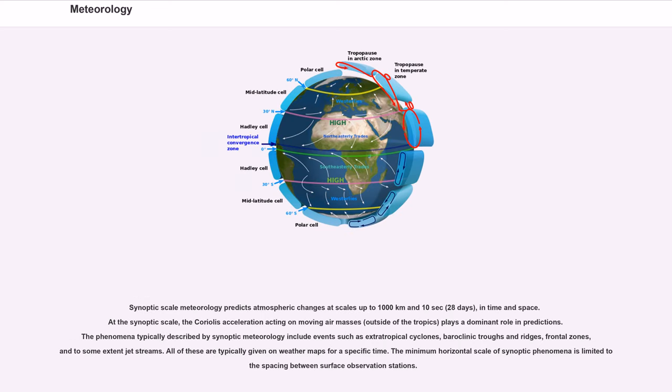Synoptic-scale meteorology predicts atmospheric changes at scales up to 1,000 km and 10 to 28 days in time and space. At the synoptic scale, the Coriolis acceleration acting on moving air masses plays a dominant role in prediction. The phenomena typically described by synoptic meteorology include events such as extratropical cyclones, baroclinic troughs and ridges, frontal zones, and to some extent jet streams. The minimum horizontal scale of synoptic phenomena is limited to the spacing between surface observation stations.